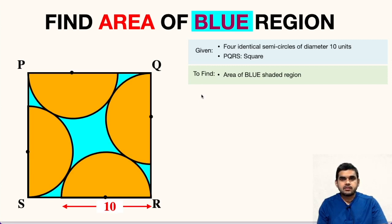Welcome to my YouTube channel. Once again, I am back with an interesting question today. So in this figure, we have to find the area of blue shaded region. It is given that there are four identical semicircles, each of diameter 10 units and PQRS is a square. We are asked to find the area of blue shaded region.